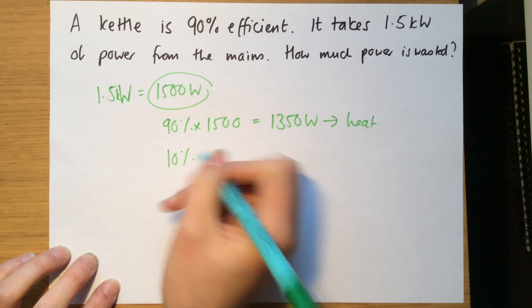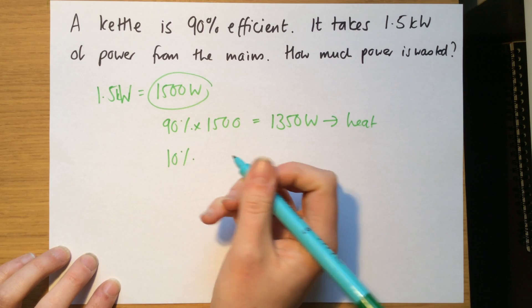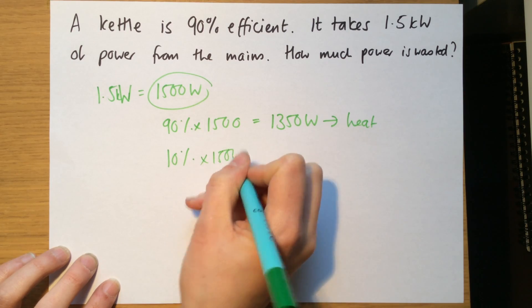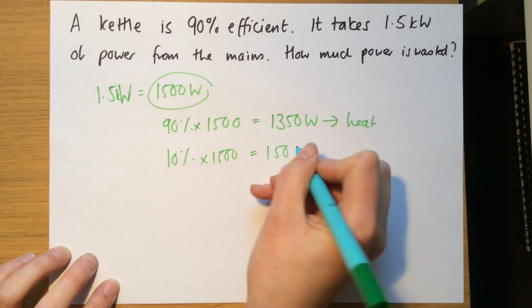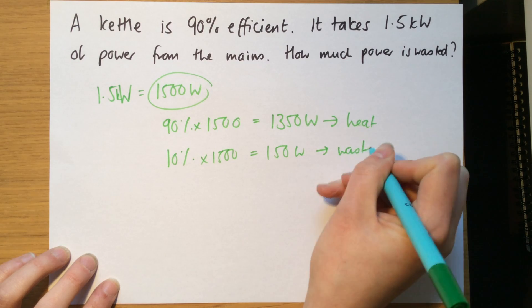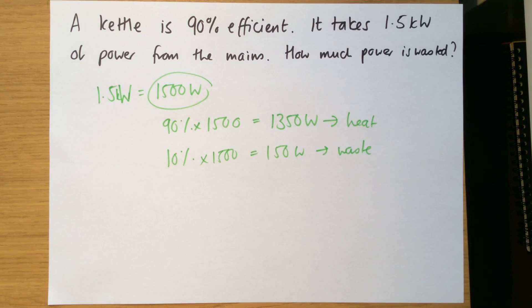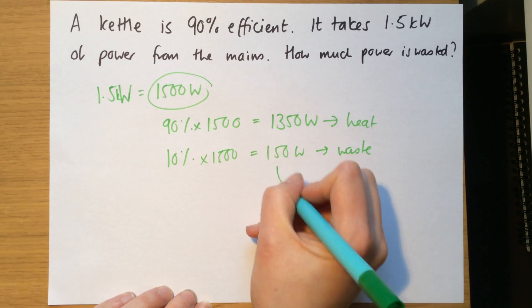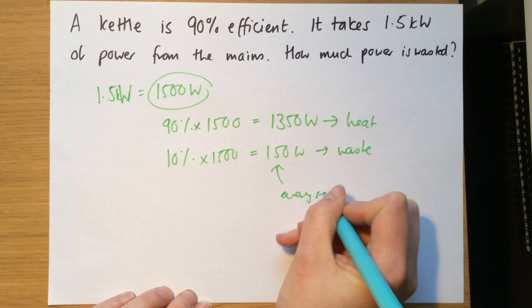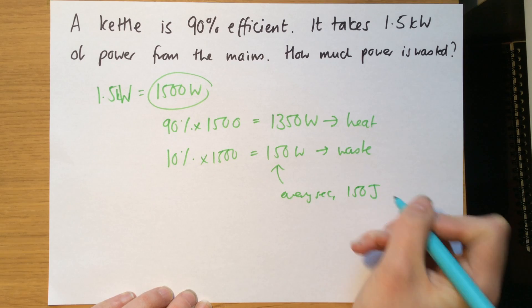Now, 10%, if it's 90% efficient, that means that 10% is wasted. So 10% of that, equal to 150 watts, is waste. So it wastes 150 watts of power, or 0.15 kilowatts of power. Now, that means that every second, we waste 150 joules of energy.